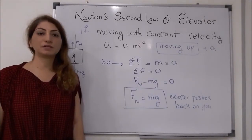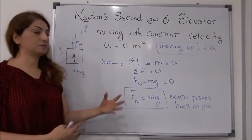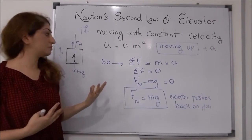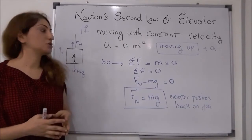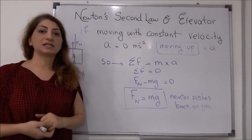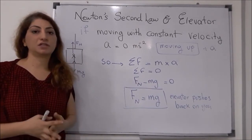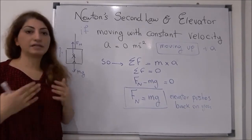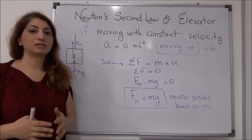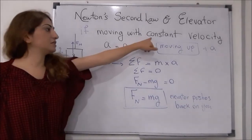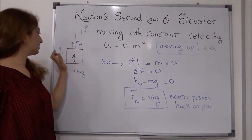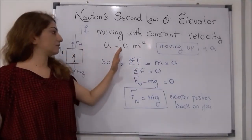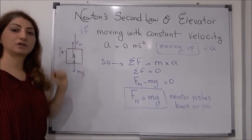Now we want to calculate the normal force for a person in an elevator moving upward with a constant velocity. If the elevator is moving with a constant velocity, it means the speed is not changing, so we don't have acceleration — acceleration is a change in velocity of the object. When there is no change in velocity, the acceleration is zero. So here, if there is constant velocity moving upward, the direction is positive, and forces pointing upward are considered positive.